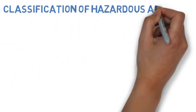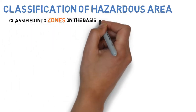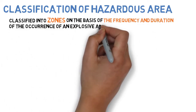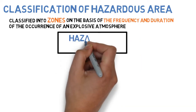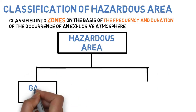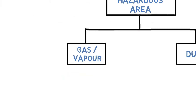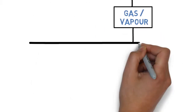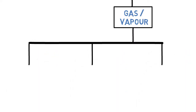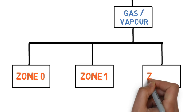Classification of Hazardous Area. Hazardous areas are classified in terms of zones, on the basis of the frequency and duration of the occurrence of an explosive atmosphere. Hazardous areas are classified into two major categories: gases or vapors, and dusts. Under gases or vapors, hazardous areas are classified into three different zones: Zone 0, Zone 1, and Zone 2.